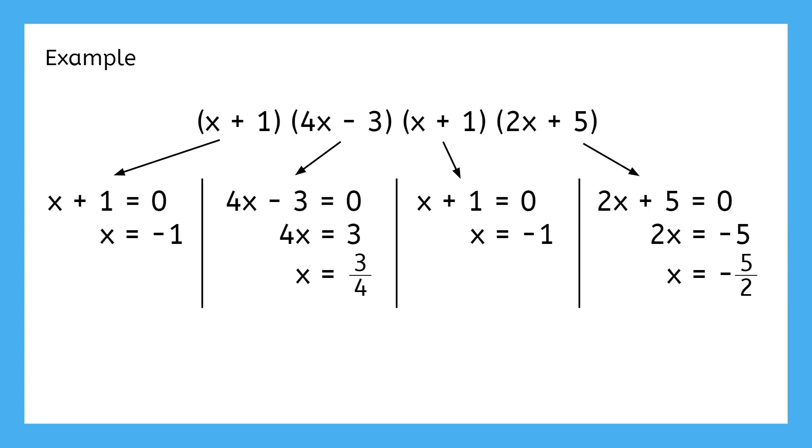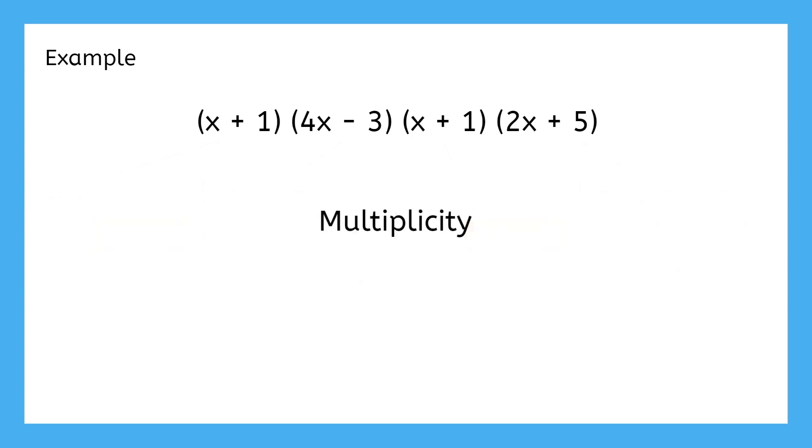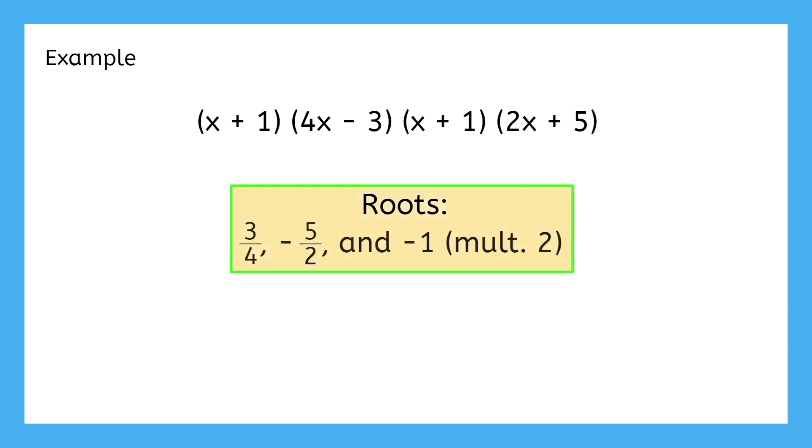But wait, does something seem off to you? The same root appears multiple times. If a root appears multiple times, we say it has multiplicity. Since negative one is a root twice, instead of listing it twice, we just say negative one with multiplicity two.